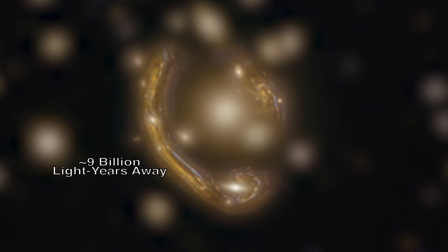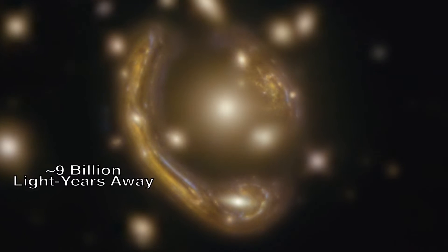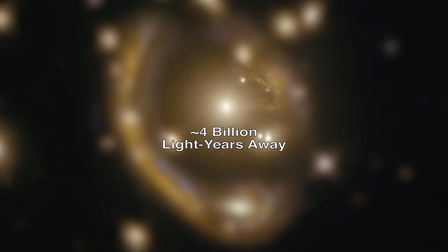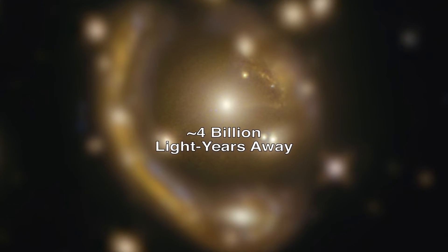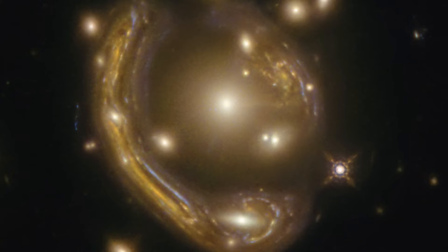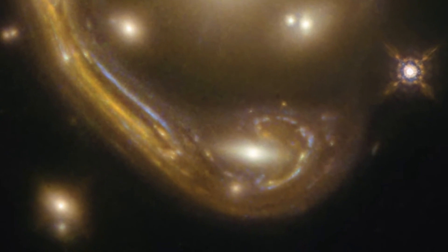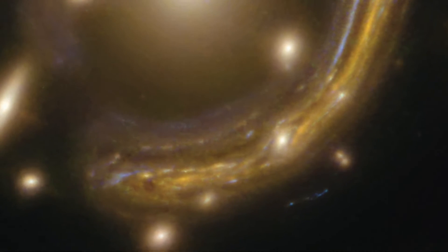In this case, the light from the background galaxy was distorted into the curve we see by the gravity of the galaxy cluster sitting in front of it. The near exact alignment of the background galaxy with the central elliptical galaxy of the cluster, seen in the middle of this image, has warped and magnified the image of the background galaxy around itself into an almost perfect ring.